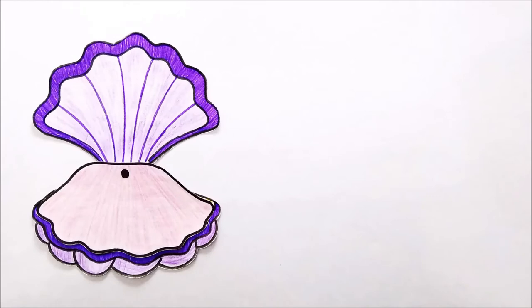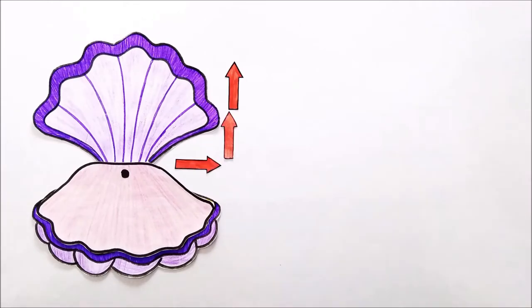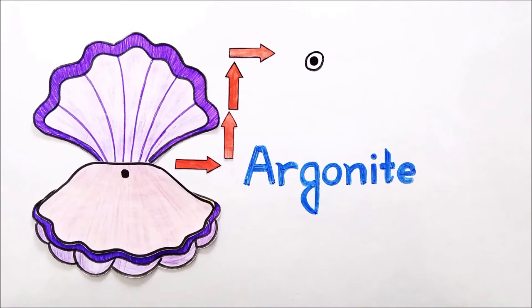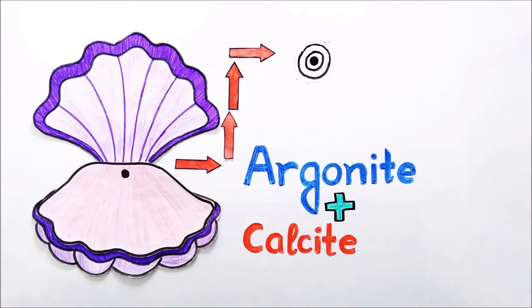The animal senses the foreign object and starts to deposit layers of calcium carbonate in the form of mineral aragonite, or many times as a mixture of aragonite and calcite. Between each layer, the mollusk secretes a very thin layer of protein, conchioline.